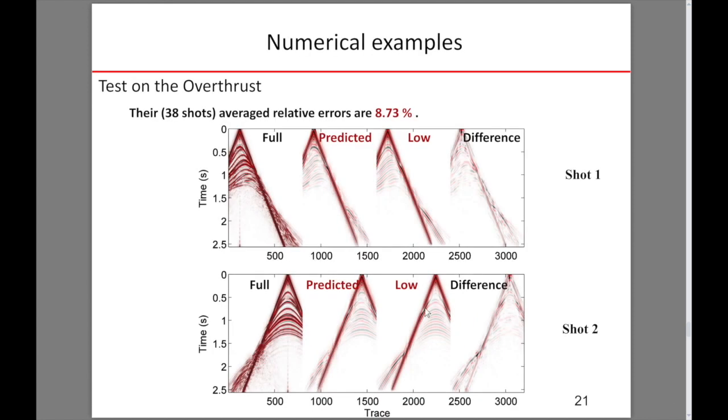After training on the Marmousi model, we applied the trained network to the overthrust model to test its generalization ability. In total, 38 shots are involved in the network predictions. This slide shows two shots from the overthrust model. Comparing with the true low-frequency data, the predictions are highly consistent, especially for reflections. The average relative errors are 8.73%.